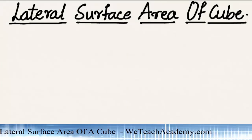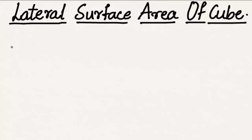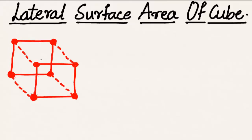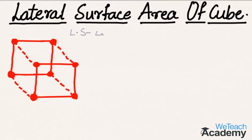Welcome to vdchacademy.com. In this presentation we are going to discuss the lateral surface area of a cube. Using a rough diagram, here we have a cube where all the sides are in the form of a square. The side portions of the cube are known as lateral surfaces, and a cube has four lateral surfaces.